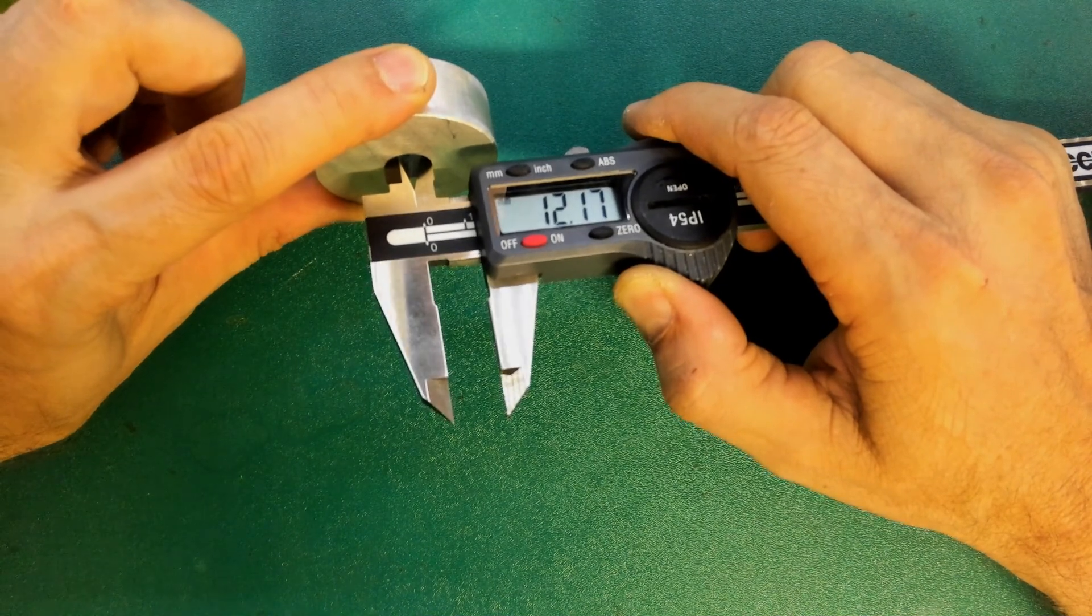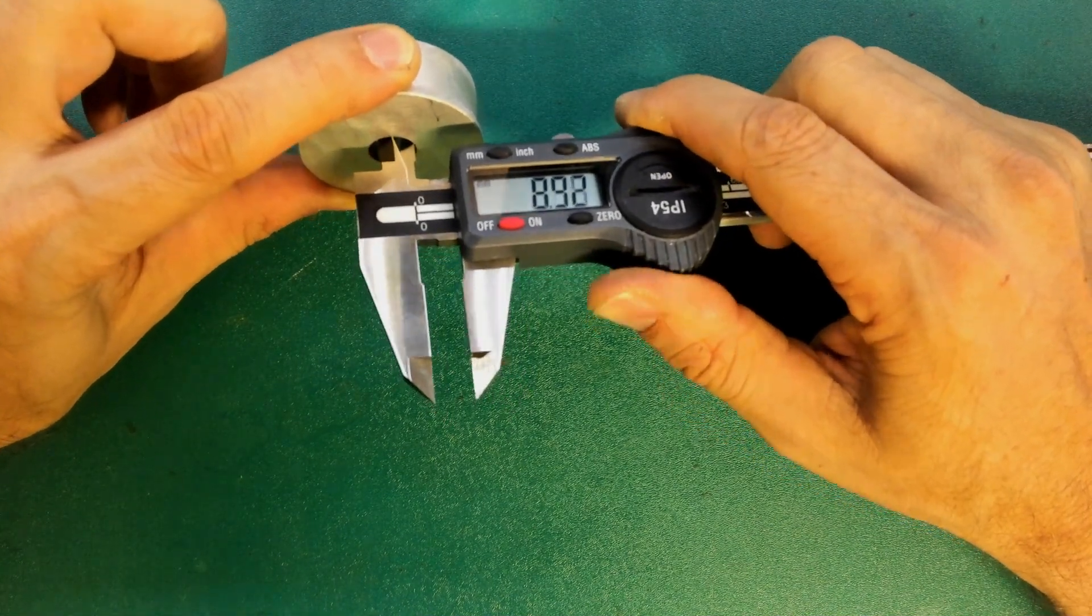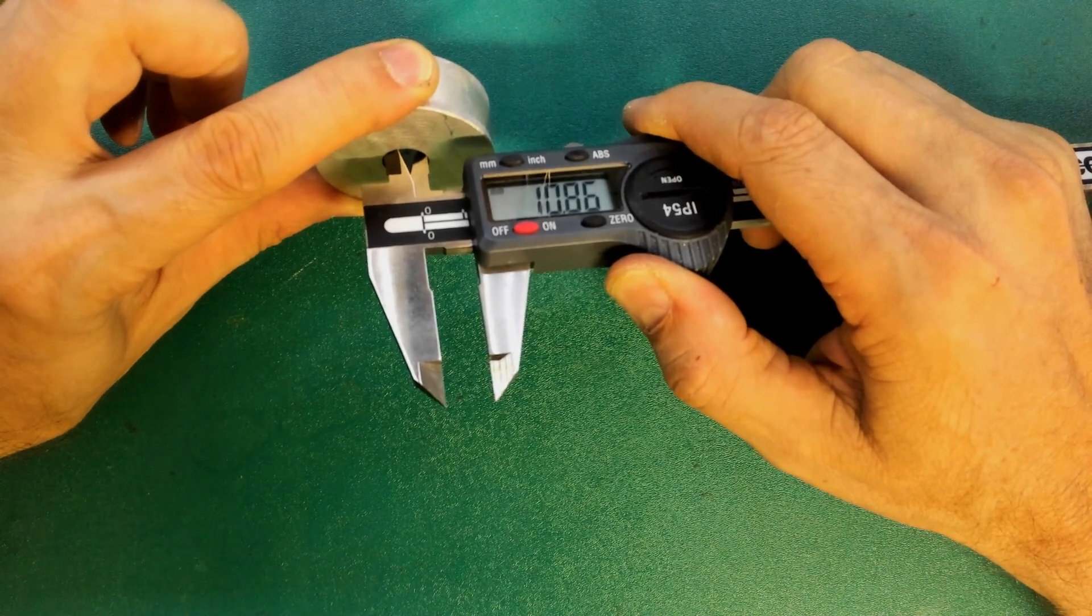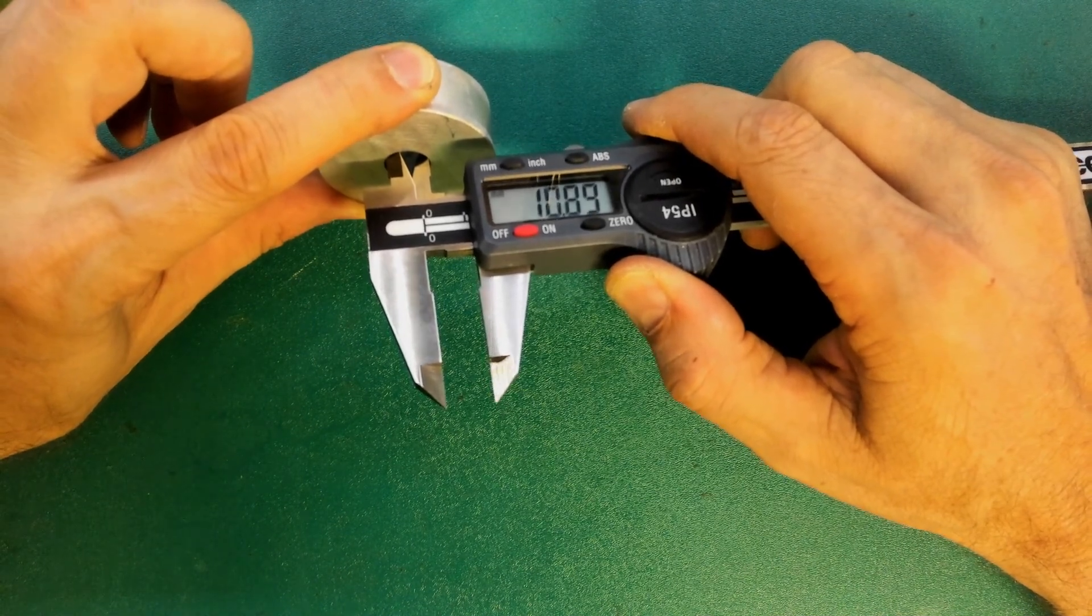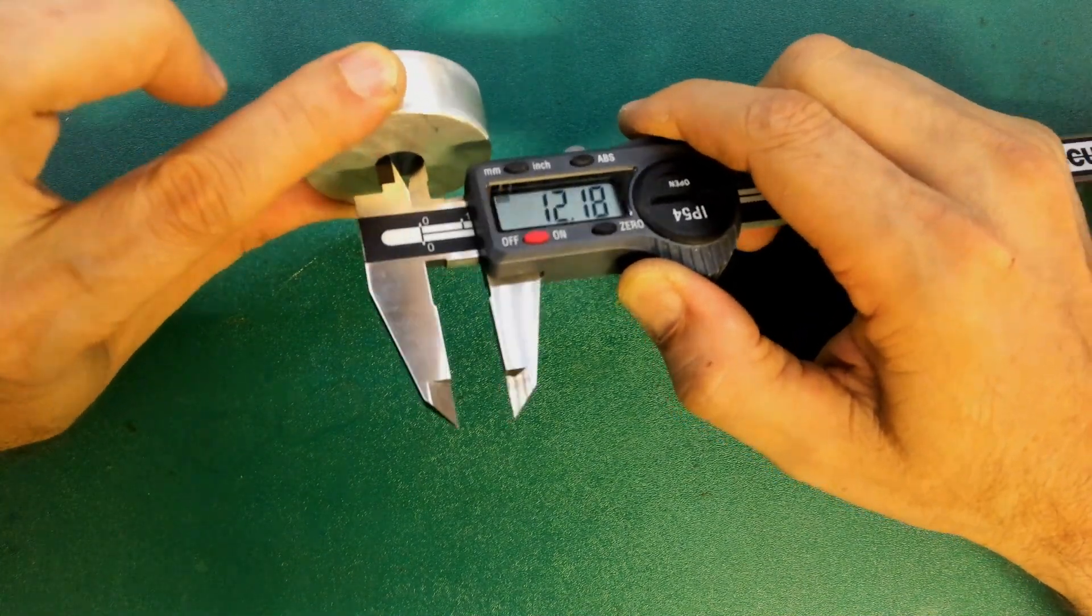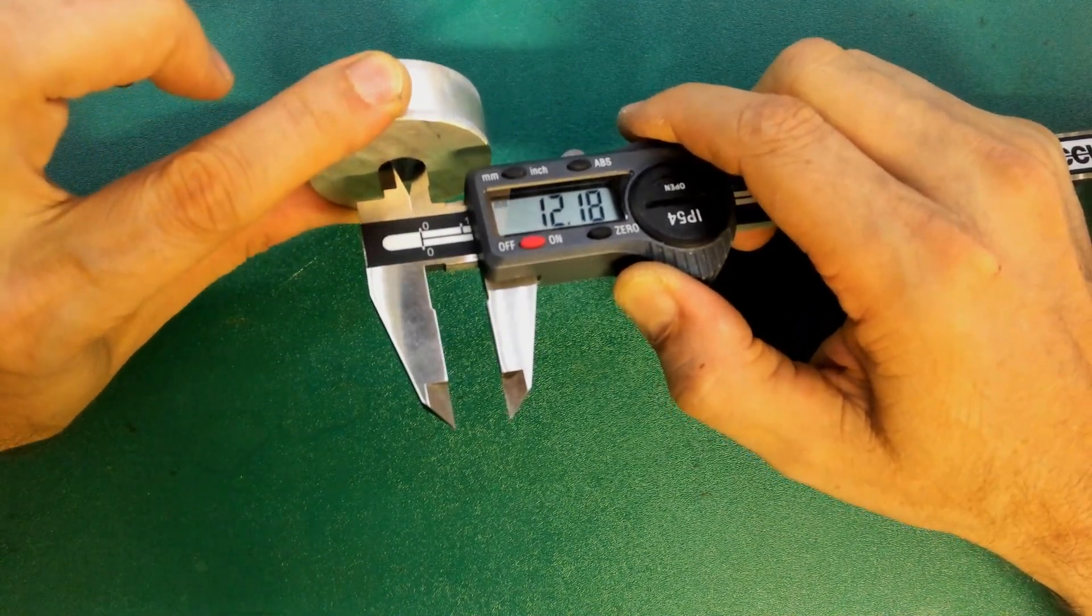It's very easy to measure not across the diameter. Here you can see that I've purposely pushed the jaws not against the diameter and I'm getting a reading that's not accurate. You need to open the jaws and move it back and forth a little bit to find the edge of the diameter of that circle.